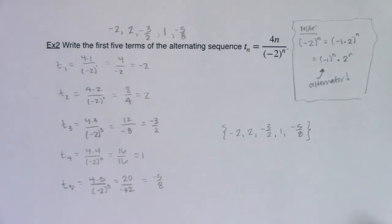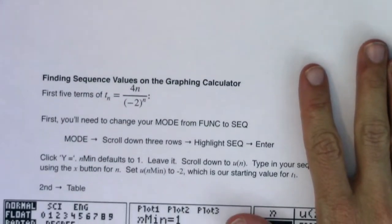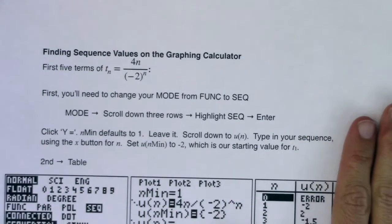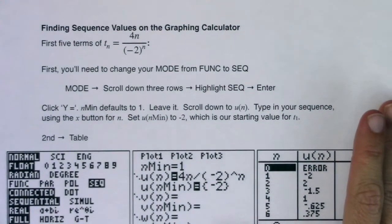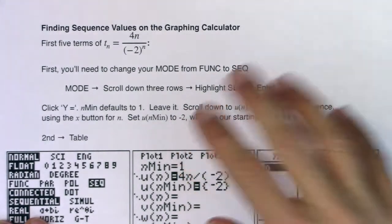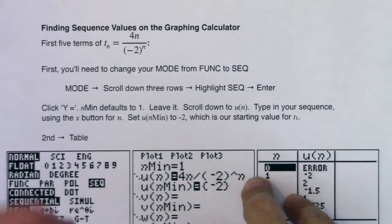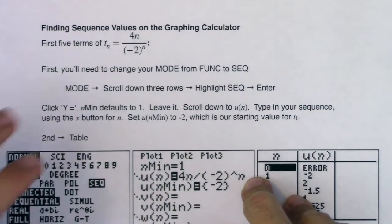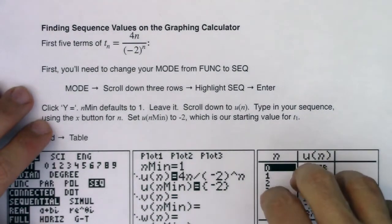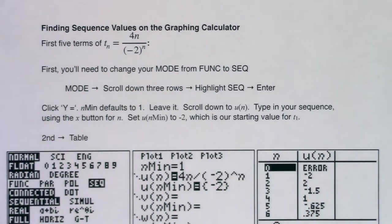So with that, I'm going to flip over to my computer because I want to teach you yet another way that you can find these sequences and all the terms that go with them on your calculator. So we had the way that I showed you to work sequences in example 1. This is a more intricate version that can be helpful when we go to graph things. All right, so with that, I'm going to flip to my computer, and we're going to take a look at a different way of finding sequence values on your graphing calculator.